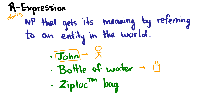That looks like a flask of alcohol, but I assure you that is a bottle of water. 'Ziploc bag' refers to, of course, this lovely bag that stores stuff and says Ziploc on the front. My drawing is terrible, but the point is R-expressions refer to actual things in the world.